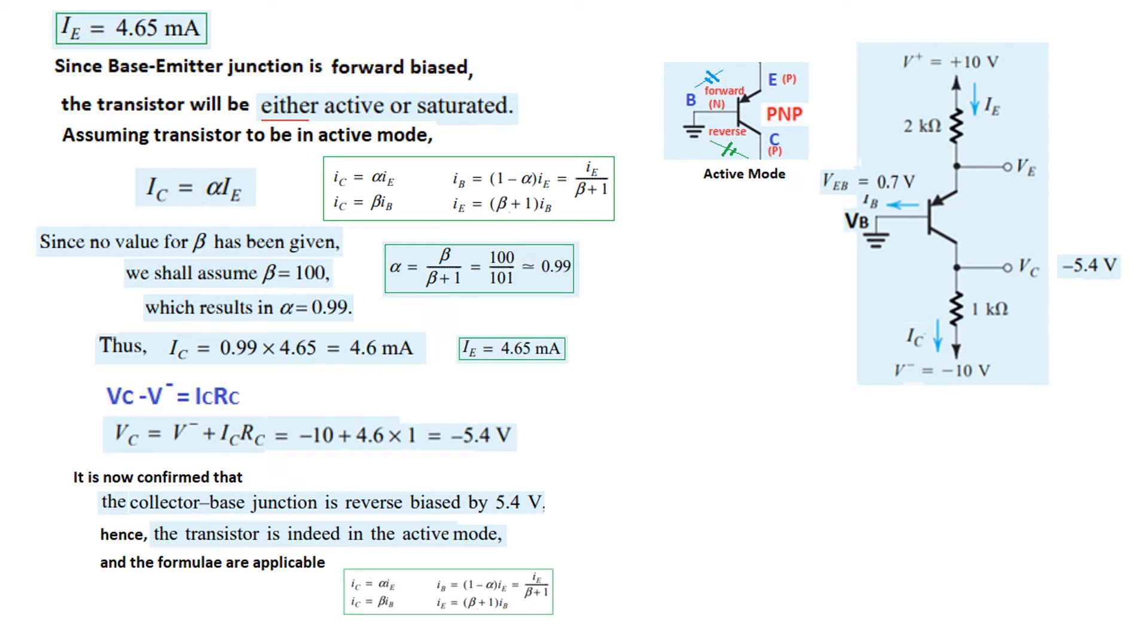It is now confirmed that the collector base junction is reverse biased by 5.4 volt and the transistor is indeed in active mode. And so, the formulas that we have mentioned are applicable. So, the only parameters now left is IB. So, from this formula, we can calculate IB. IB will be IC over beta. IC we know, beta we know. So, IB is 0.046 milliampere. So this will be answered.